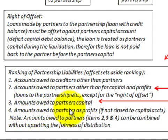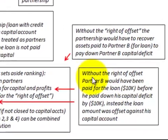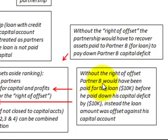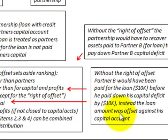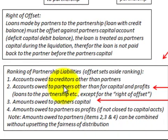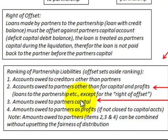And fourthly, the amounts owed to the partners as profits. So without this right of offset, partner B would have been paid for the loan of $10,000 before paying down his capital deficit. Instead, the loan amount was offset against his capital account — taken from the number two ranking and moved into the partner's capital account, which now has a number three ranking.